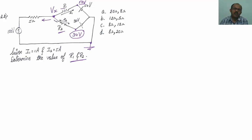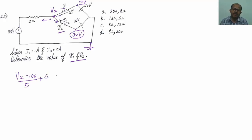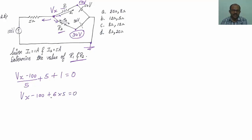Assuming all currents are leaving the node, the KCL equation at Vx is: (Vx - 100)/5 + 5 + 1 = 0. Simplifying: Vx - 100 + 30 = 0, so Vx = 70 volts.